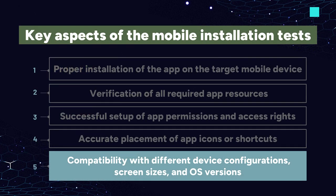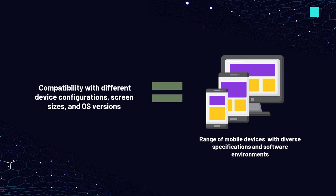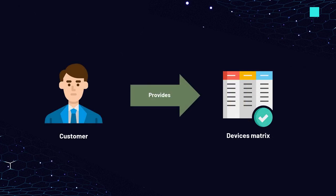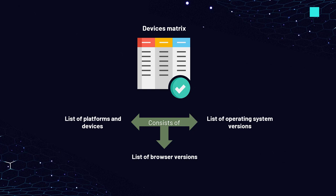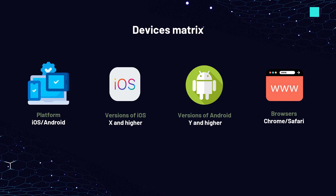The next key aspect is compatibility with different device configurations, screen sizes, and OS versions. This refers to the app's ability to function properly across a wide range of mobile devices with diverse specifications and software environments. Testing on all devices is time-consuming, so the customer typically provides a device matrix listing platforms, OS versions, and browser versions — for example, iOS and Android, iOS version X and higher, Android version Y and higher, and browsers such as Chrome or Safari.